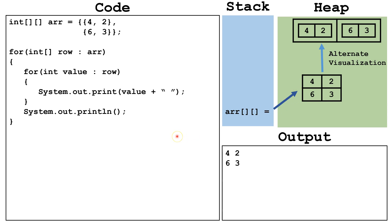Now let's talk about some limitations of for-each loops. First, you could change the value of the value variable, but that wouldn't affect the array. So if you want to change the data in the array, you should be using for loops, not for-each loops. Also, a for-each loop will go through each of the indexes in the array — it won't let you skip in any way. So while it's a little easier to write, it's a little more limited with what you can do with it.